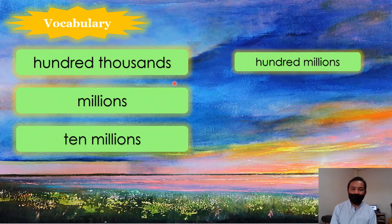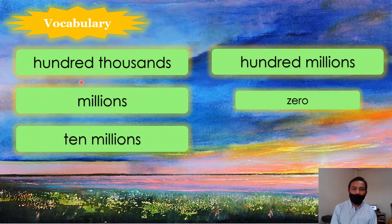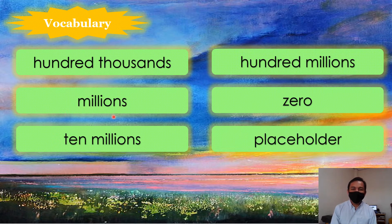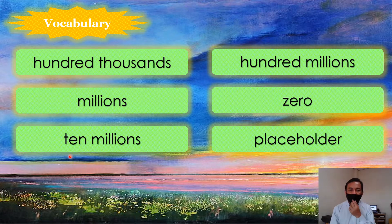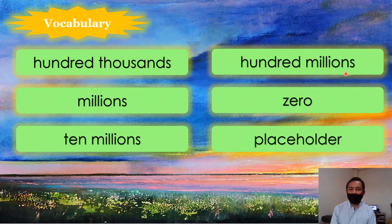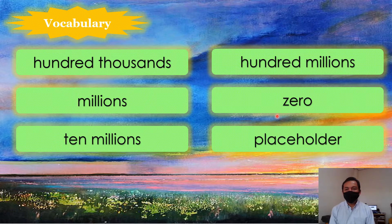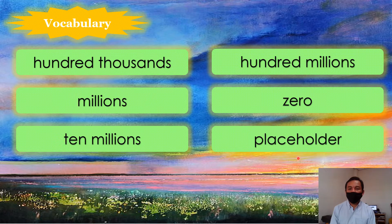Hundred thousands, hundred thousands. Millions, millions. Ten millions, ten millions. Hundred millions, hundred millions. Zero, zero. Placeholder, placeholder.